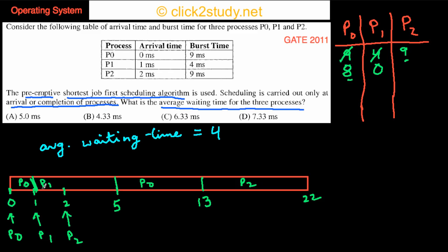What about P1? P1 came here and it got done, so P1 did not wait at all, so zero. What about P2? P2 came here and it got the CPU out here. It came at 2, it got the CPU at 13, so 13 minus 2 is 11. That's the waiting time. So this divided by 3 is 15 divided by 3, and that is 5. That is the correct choice.